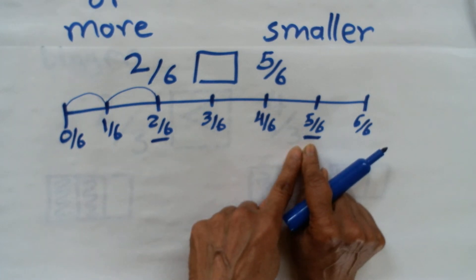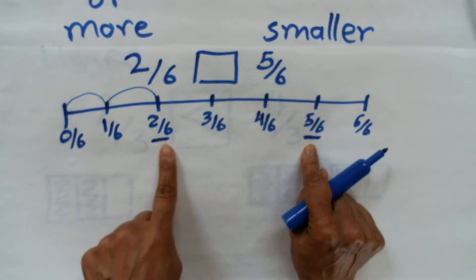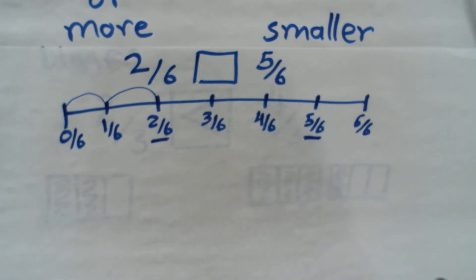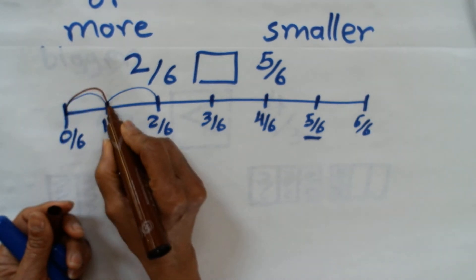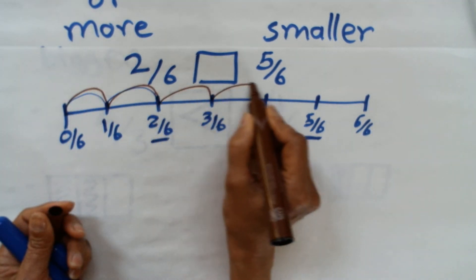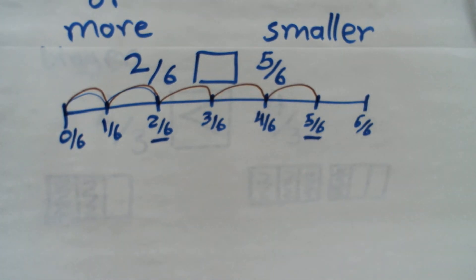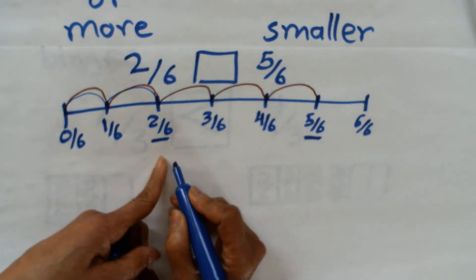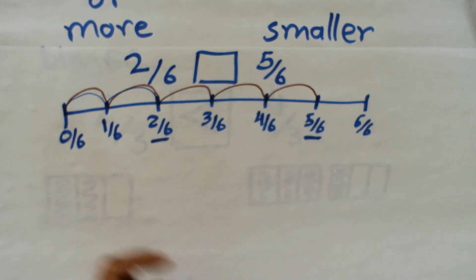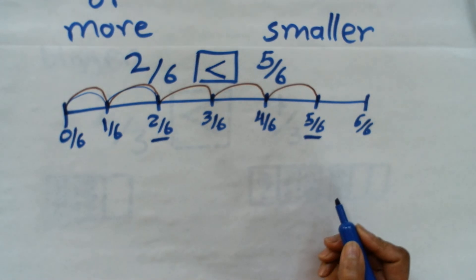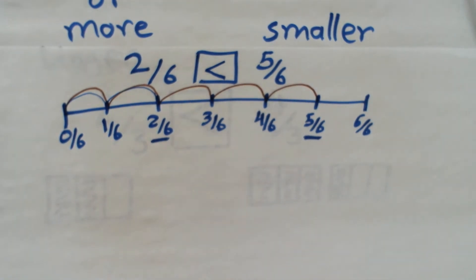But 5/6 is farther than 2/6. I have to make more than 2 jumps - I have to make 5 jumps to reach 5/6. So I can say 2/6 is less than 5/6.